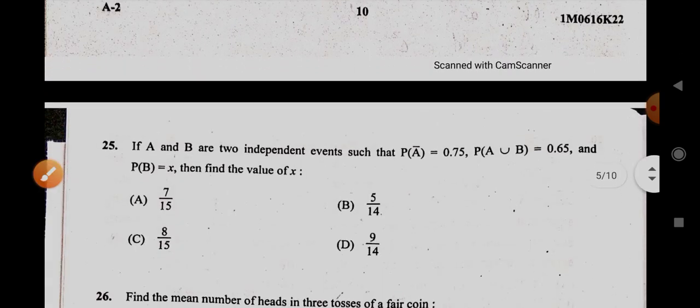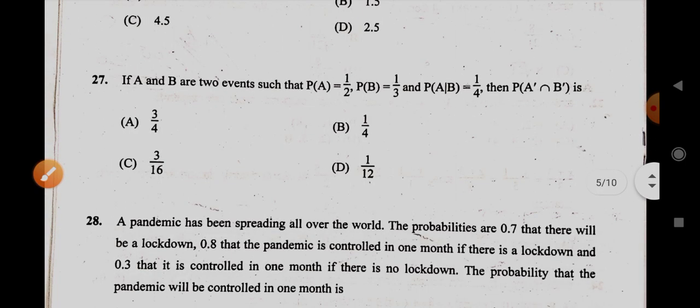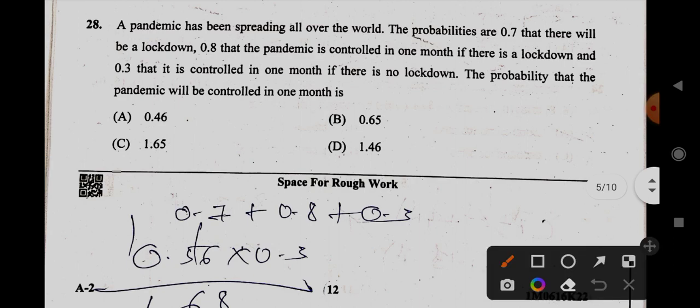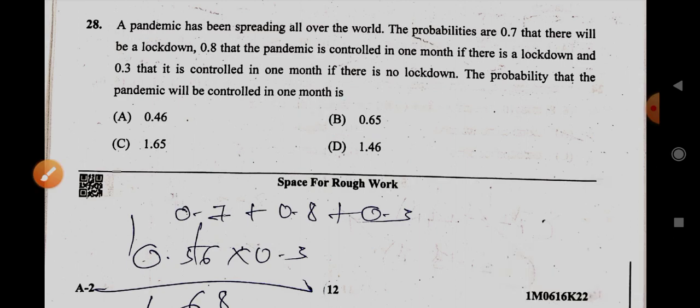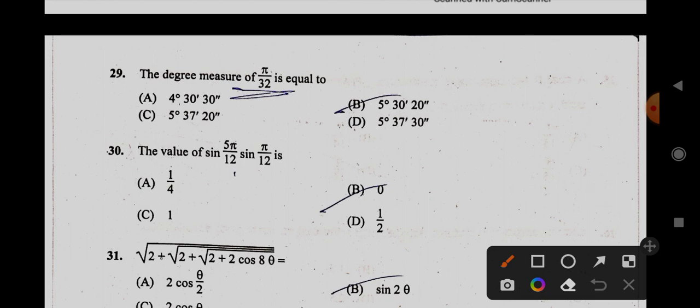And 24th is A, only two points, only two values. And 25th, it is C. 26th, it is B, 1.5. 27th, it is very easy, it is B. 28th, this is 0.65. And now 29th option, it is C.